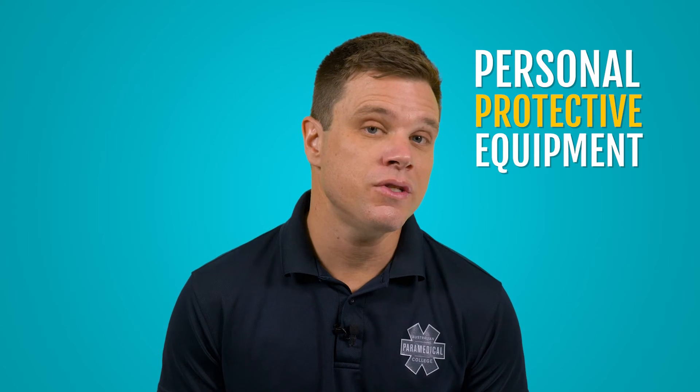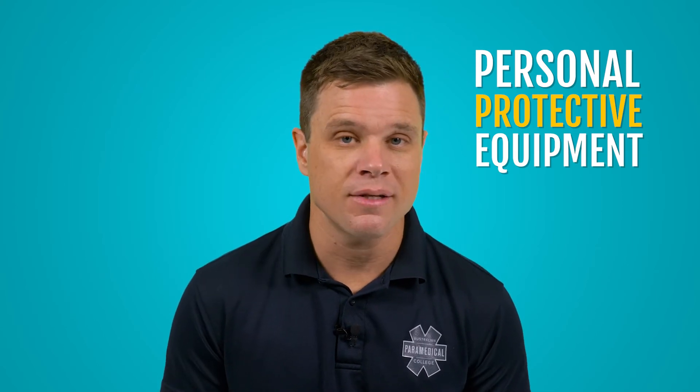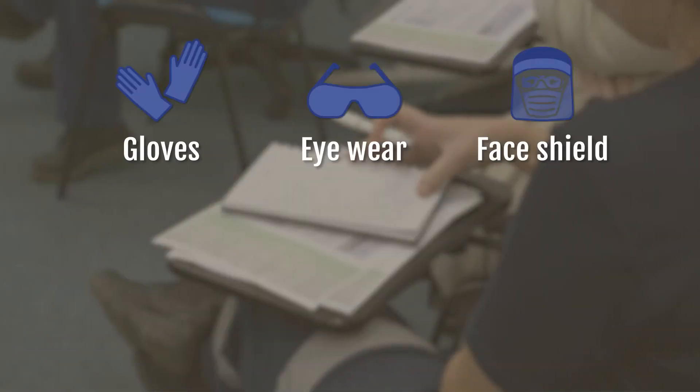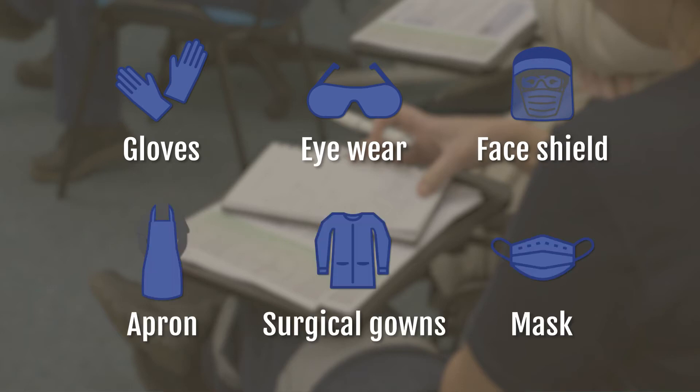Let's talk about PPE. Personal protective equipment is used in many professions to protect employees. In healthcare it is used to protect healthcare workers from the transmission of infection and from transmitting pathogens to their patients. PPE used in healthcare for this purpose includes gloves, eyewear, face shields, aprons, surgical gowns and masks.